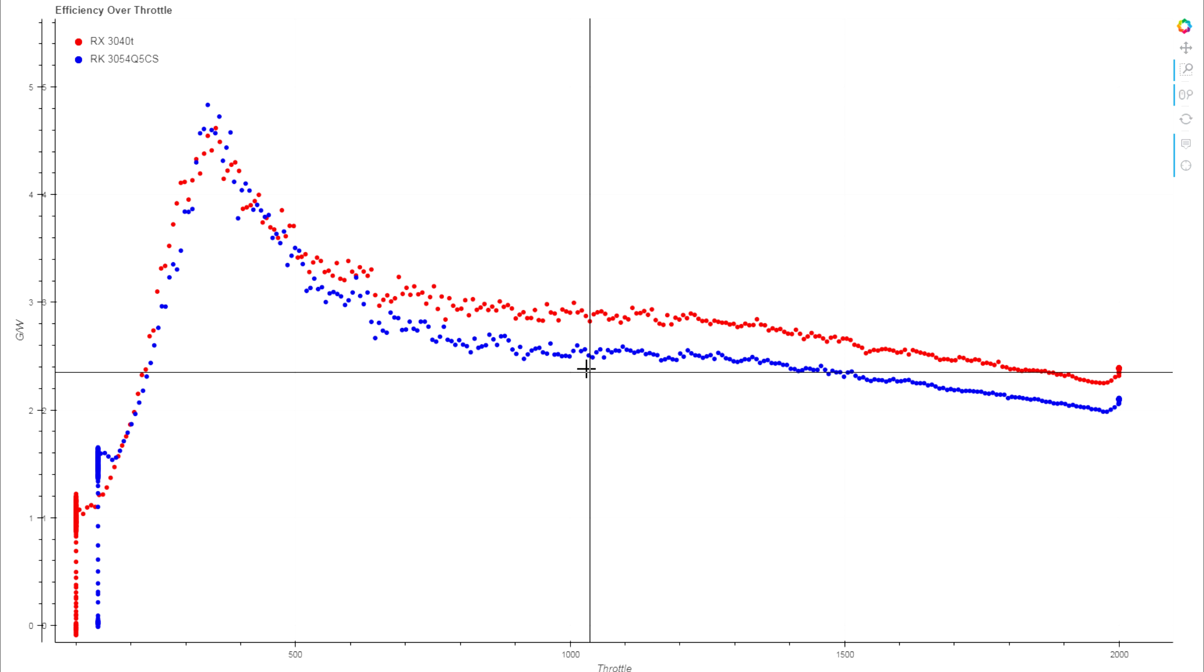We're on the quad-blade down to about two grams per watt, and on the RotorX we're getting that 2.26 at peak. Then at about half throttle, this is like 2.5 for that, and we're getting like 2.9, almost up to three grams per watt on the RotorX 3040.